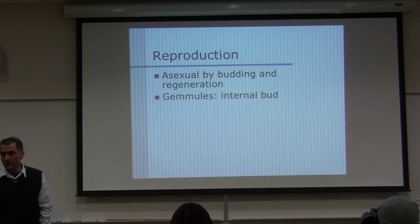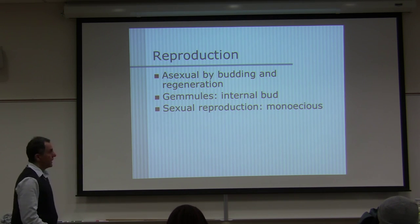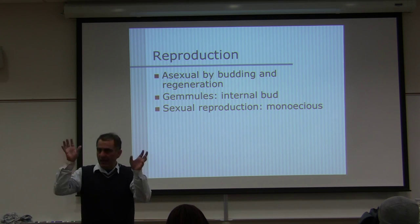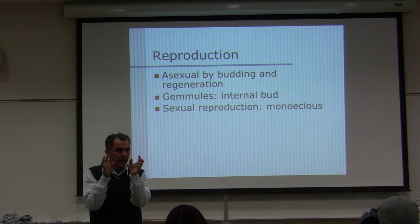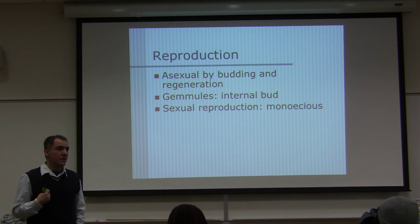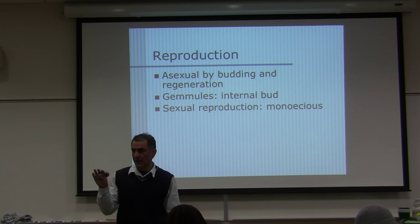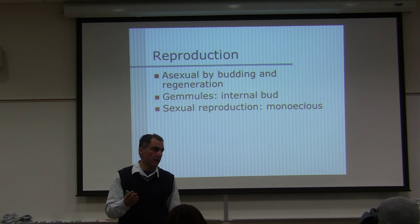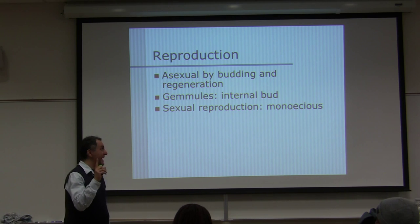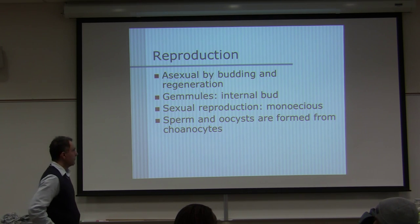Gemmules are internal buds — we do have a slide of them, make sure you look at it. Sexual reproduction: sponges are monoecious, meaning they have both male and female reproductive structures. Sperm and oocytes are formed from choanocytes.